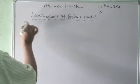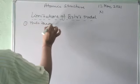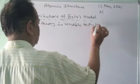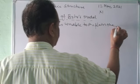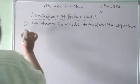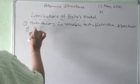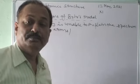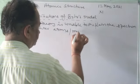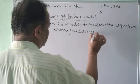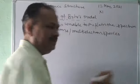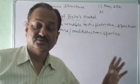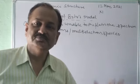The first point: this theory is unable to explain the spectrum of heavier atoms, or multi-electron species. Actually, it was the beginning of atomic structure studies, and if you see honestly, there is no fault of Niels Bohr, because science was just in its early stage and not much was known about this.